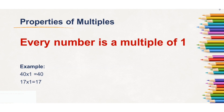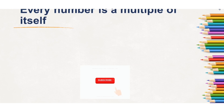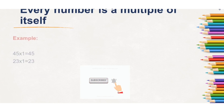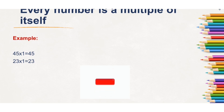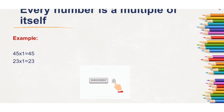Second property: every number is a multiple of itself. That means any number you multiply with 1, the multiple will be the number itself. Like, 45 by 1 is 45, so 45 is a multiple of itself. And 23 by 1 — 23 is a multiple of itself. So every number is a multiple of itself.